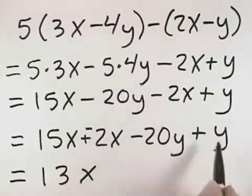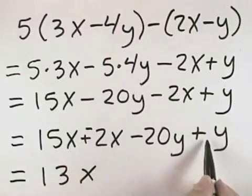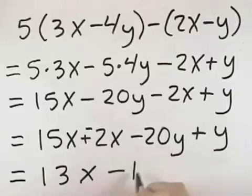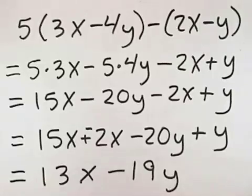Here a negative 20, and when there's no coefficient, that means a coefficient of 1. So negative 20 plus 1 is negative, or subtracting 19y. So we have 13x minus 19y.